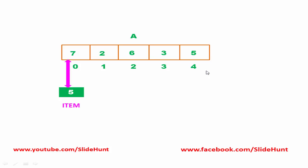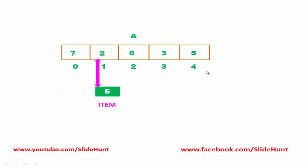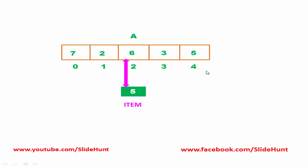First we compare the item with 7 which is at index 0 — is 5 found? No. So we check the next element. We compare item with the element at index 1 — is 5 found? No. We check the next element. We compare item with the element at index 2 — is 5 found? No. We check the next element.